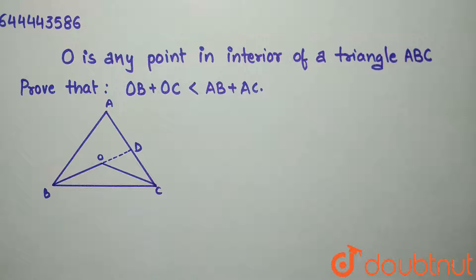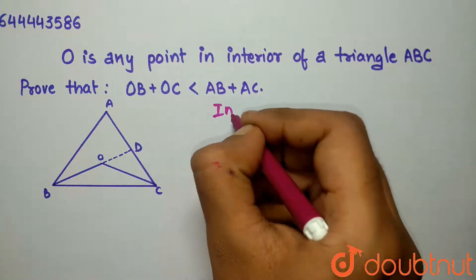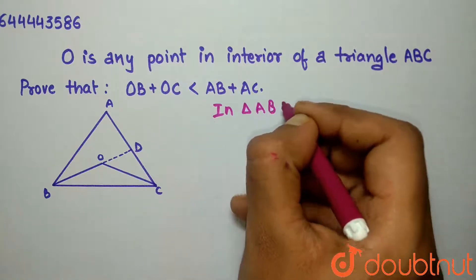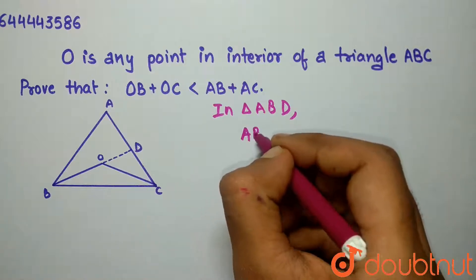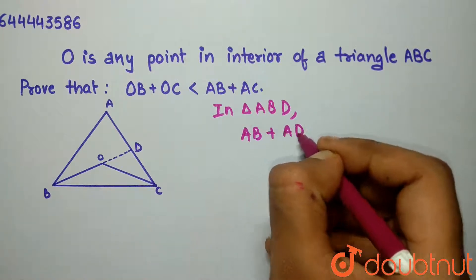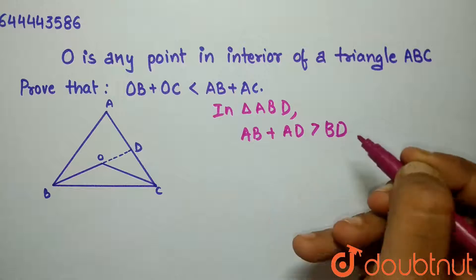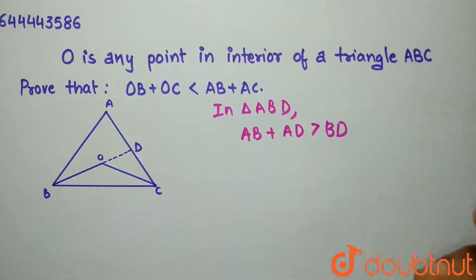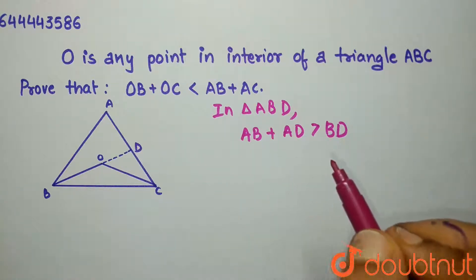In triangle ABD, AB plus AD is greater than BD. According to the properties of a triangle, the sum of any two sides of a triangle must be greater than the third side.